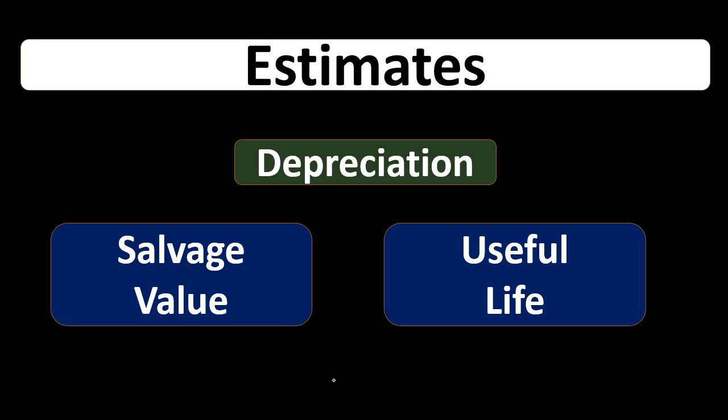To do that, we have to use an estimate. So it's not perfect — our estimating methods might be something like straight line or an accelerated method like double declining balance. No matter what method we use, it is just an estimate, and if it becomes clear in the future that our estimate is off, what are we going to do? How are we going to handle that?